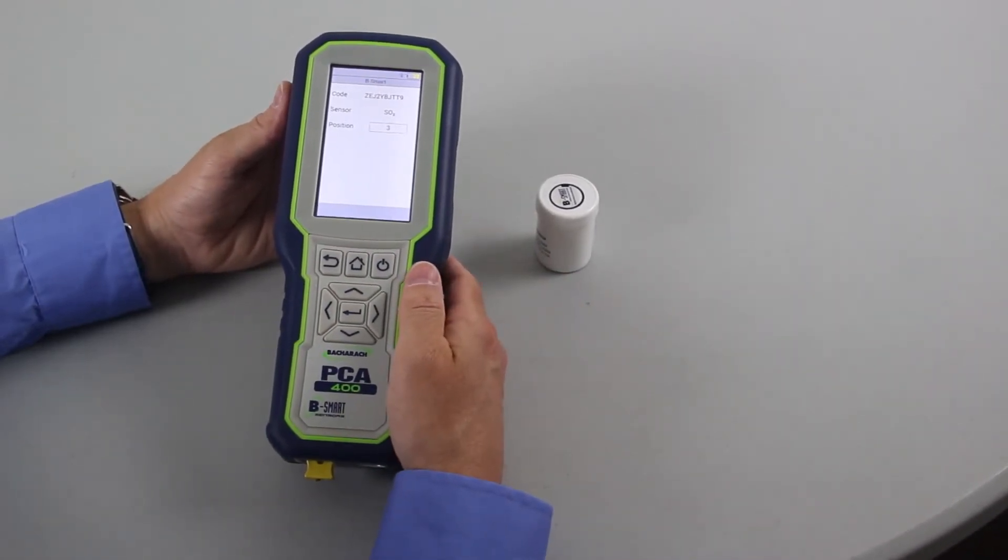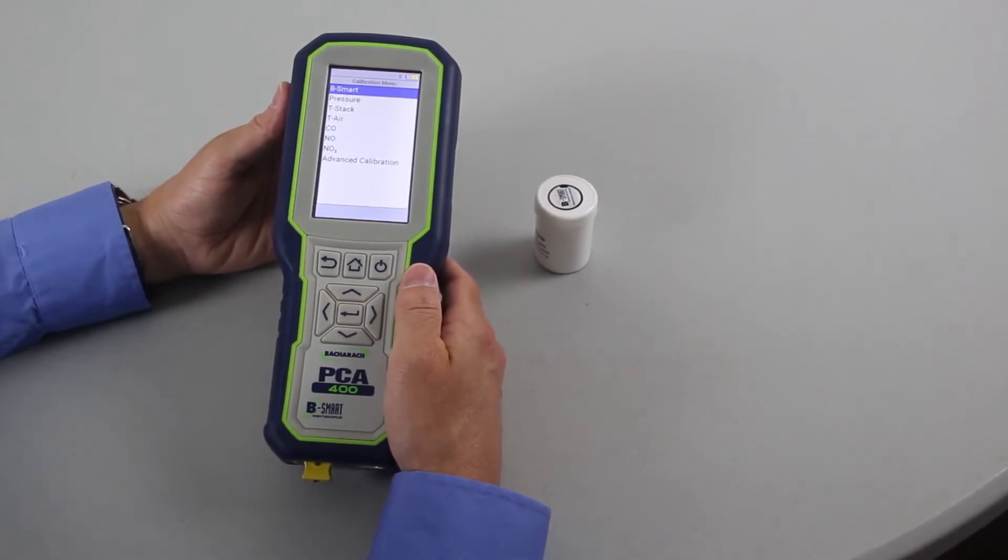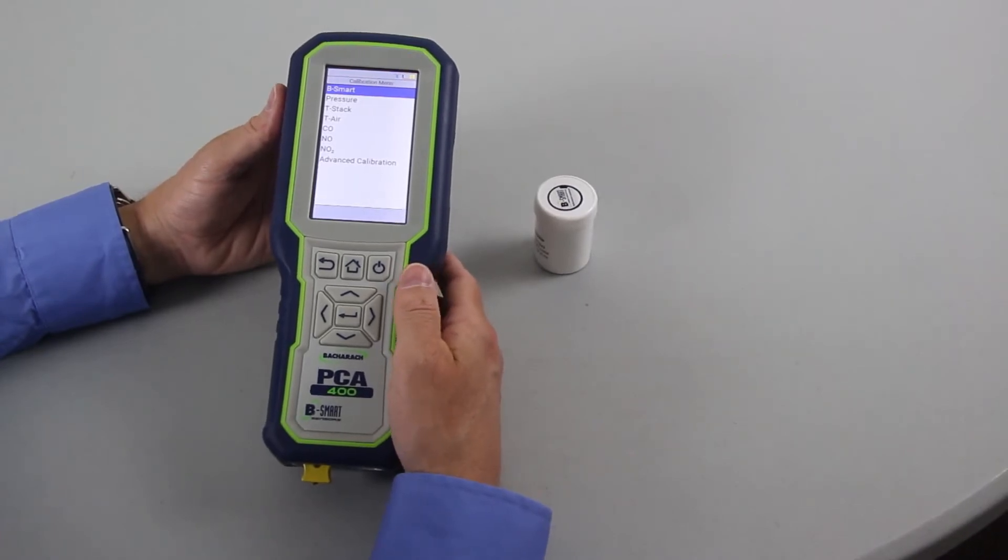This is a successful B-Smart entry screen. At this point, your unit is calibrated and ready for combustion testing.